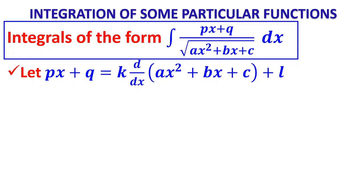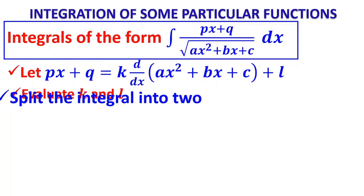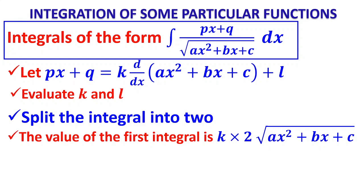How to do it? Put the linear factor px + q equal to k · (d/dx of the quadratic polynomial) + l. That is, px + q = k · (d/dx of ax² + bx + c) + l. There are two constants k and l to evaluate. Then split the integral into two. The first integral can be done directly because the numerator contains the differentiation of the term inside the square root, giving 2√(ax² + bx + c).